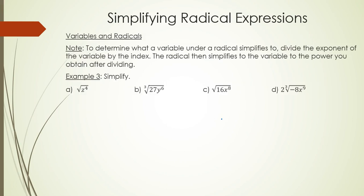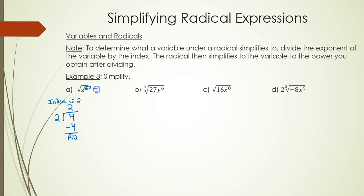Now we're going to talk about simplifying variables under radicals. It's as simple as taking the power on the variable and dividing it by the index. For part A, the index is 2. How many times does 2 go into the power 4? Twice, with a remainder of 0. That means you pull out z squared, and there should be no z remaining under the radical.